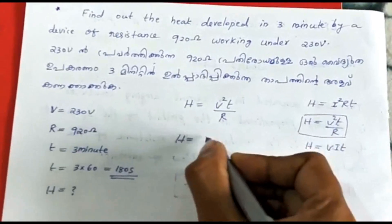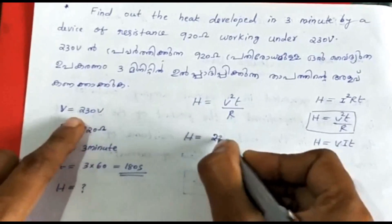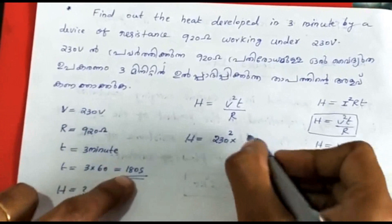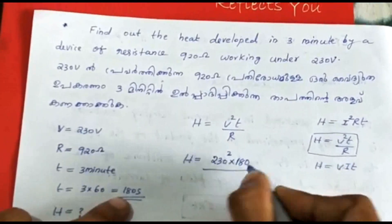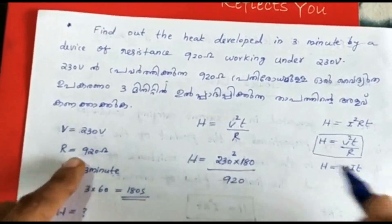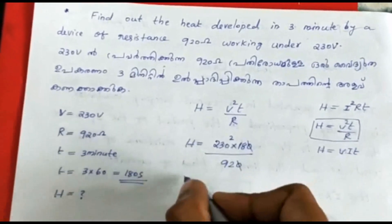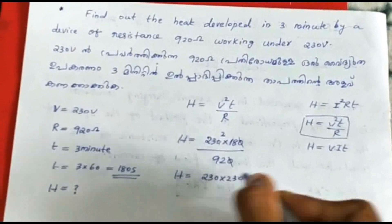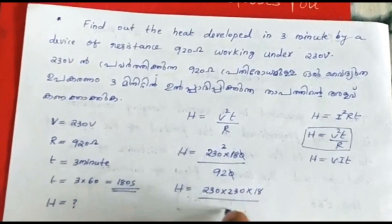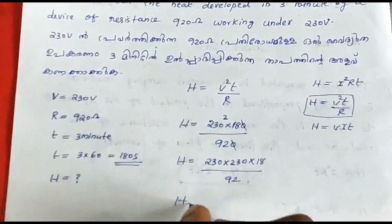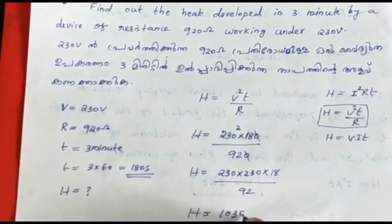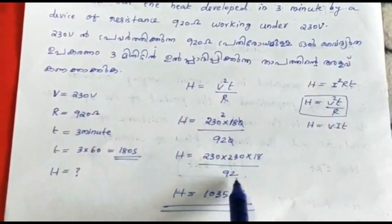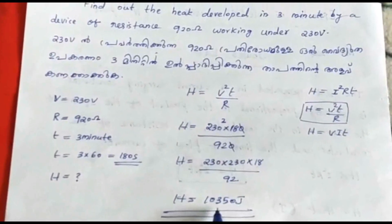H is equal to V squared T by R. V is 230, T is 3 minutes converted to seconds. So 2.30 into 2.30 into 180 divided by 920. The answer is H equals 18.35 joule. Joule is the SI unit. Multiplying and dividing, the answer is 1530 joules.